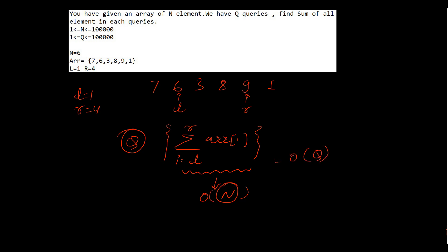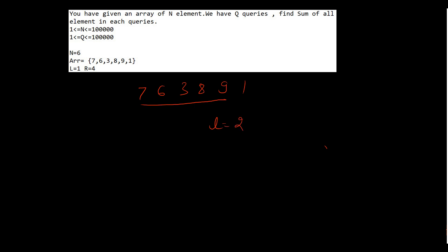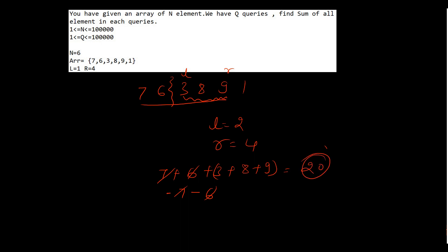Our array is 7, 6, 3, 8, 9, and 1. Let's suppose l equal to 2 and r equal to 4, meaning l is pointing to 3 and r is pointing to 9. The sum of all elements up to r is 7 + 6 + 3 + 8 + 9. We then subtract the elements before index l, which removes 7 and 6. We are left with 3 + 8 + 9 equal to 20. This confirms the approach works.